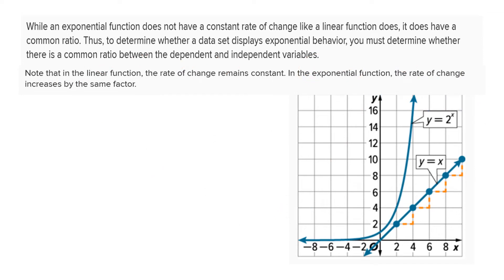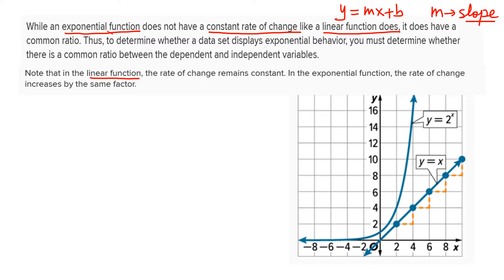Now let's look at the difference between an exponential and a linear function. In a linear function there is a constant rate of change. When we draw the graph of a linear function — the general form is y = mx + b — the rate of change has a specific name: slope. The rate of change between any two points can be calculated with the slope formula. For a linear function, the slope is always the same. The blue dotted graph you see is the linear graph of y = x.